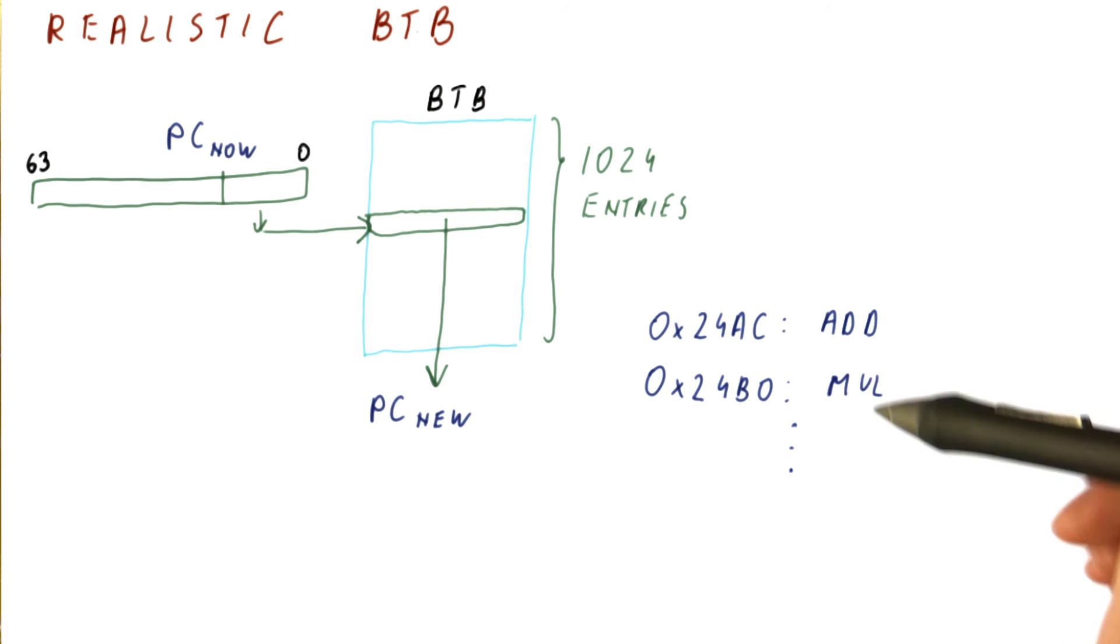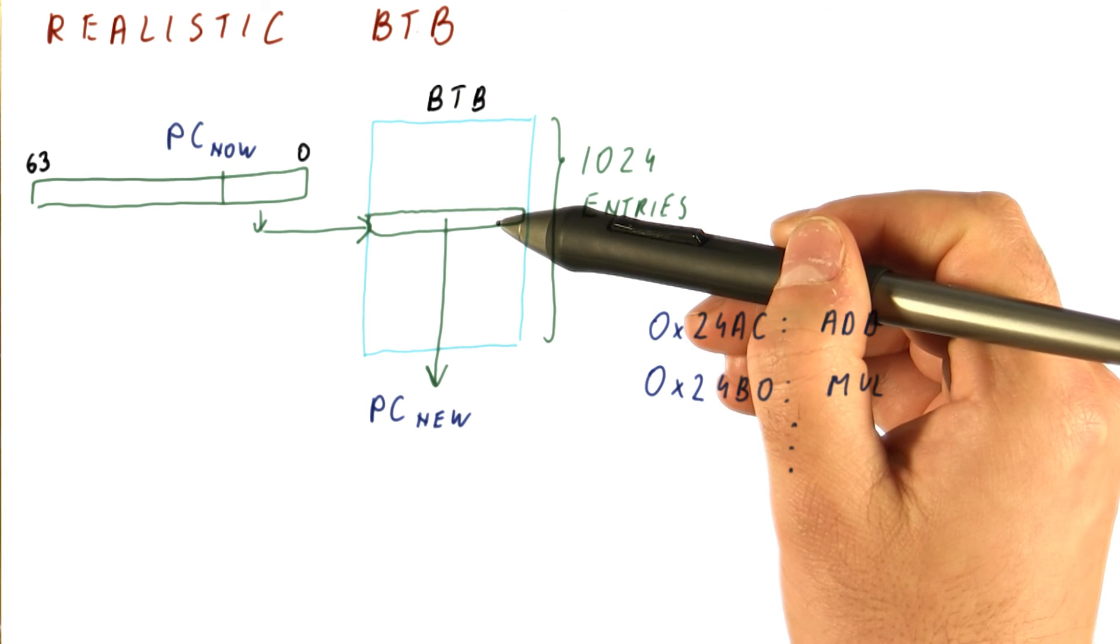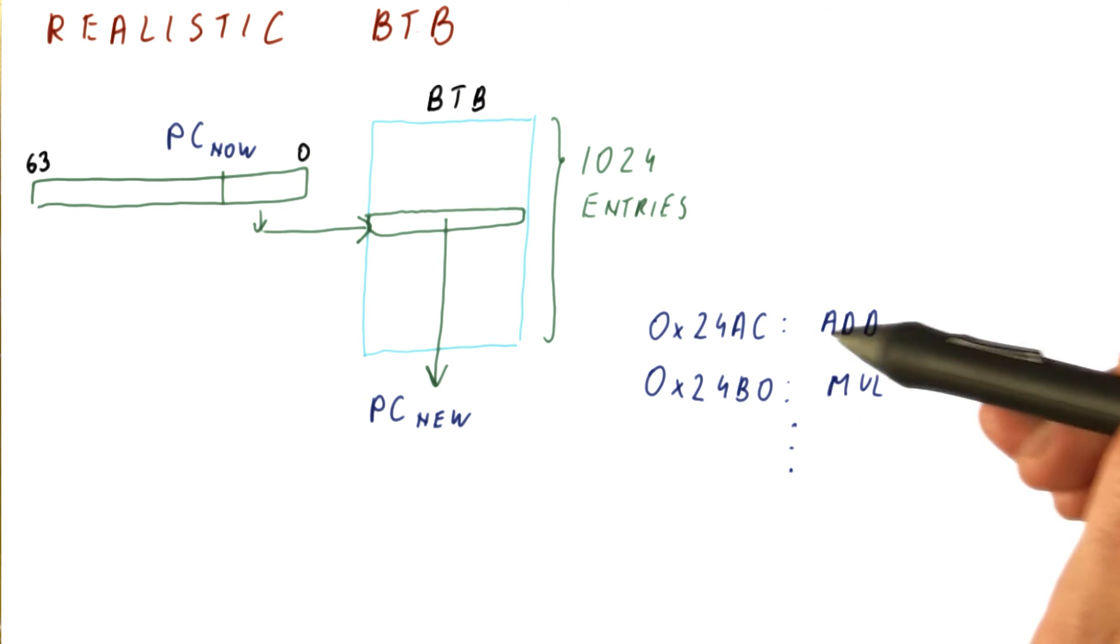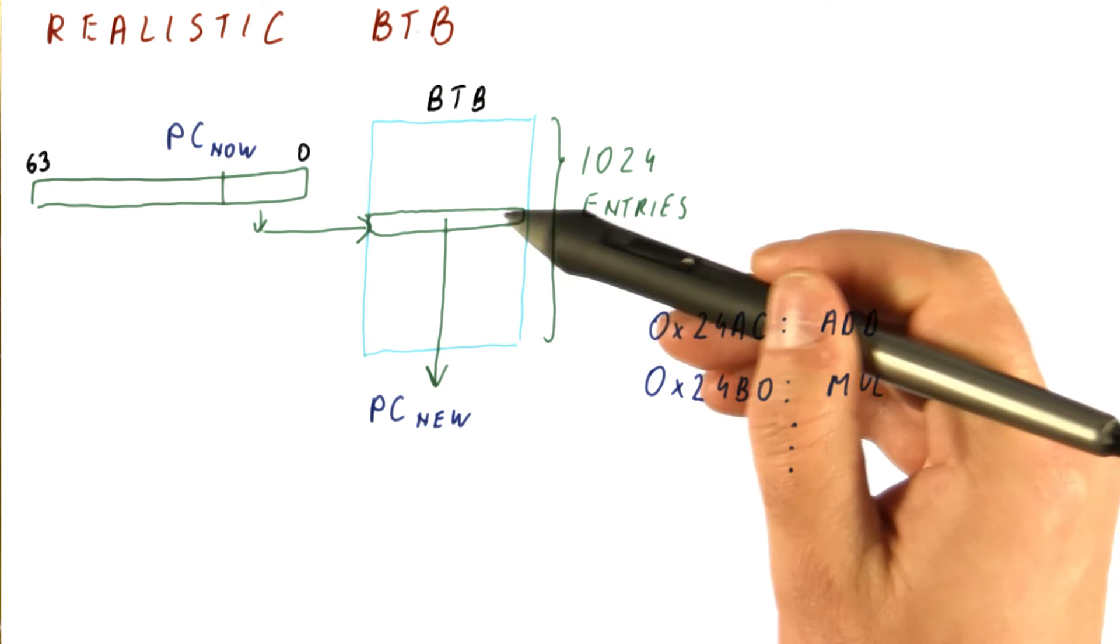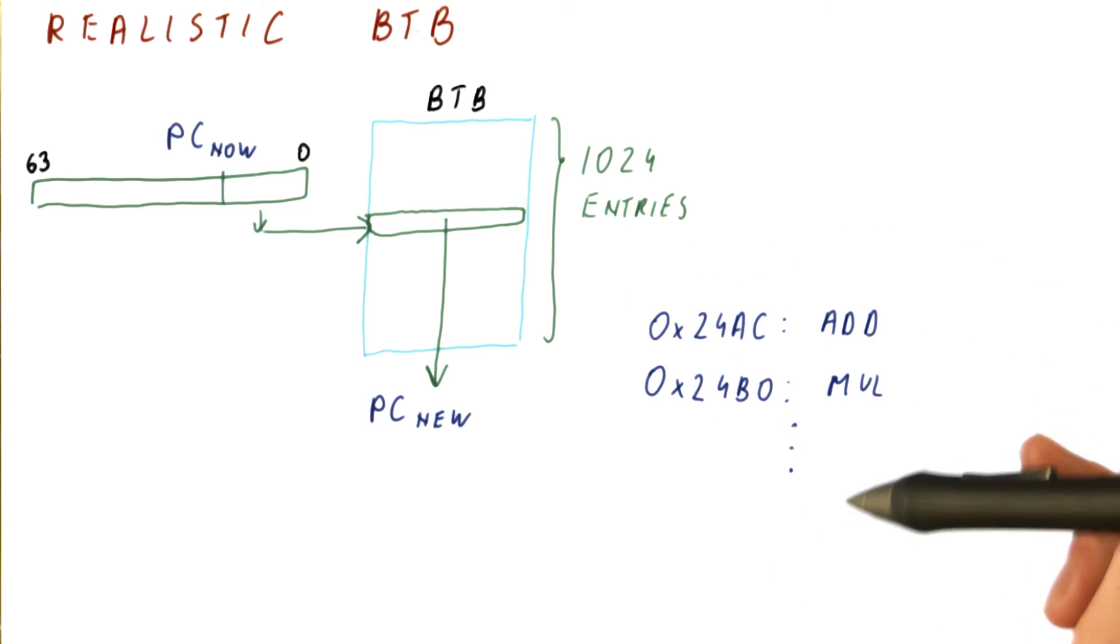Thus, if you have a loop of some sort here, all of the instructions in the loop would map to the same entry so that as we execute this loop, these instructions are kicking each other's stuff from the B2B, which we don't want to have. We want each of these to have an entry.